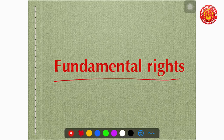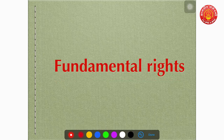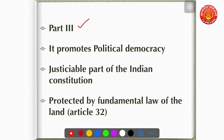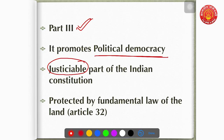The next important feature is Fundamental Rights. We will study the topic in detail during the chapter on Fundamental Rights — here just brief factual points. Fundamental Rights are given in Part Three of the Indian Constitution. Fundamental Rights promote political democracy. It is the justiciable part of the Constitution, meaning whenever a Fundamental Right is violated, you can approach the Supreme Court directly under Article 32 of the Indian Constitution.